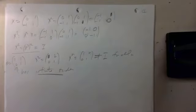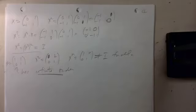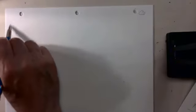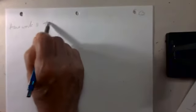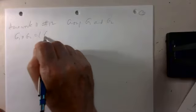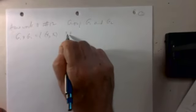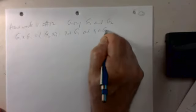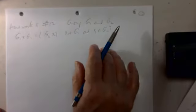Now homework 11 number 12. Let me do all of number 12 quickly. If we have groups G₁ and G₂, then G₁ × G₂ denotes the collection of all ordered pairs (x₁, x₂) where x₁ is in G₁ and x₂ is in G₂.